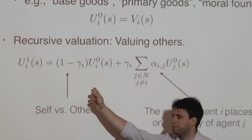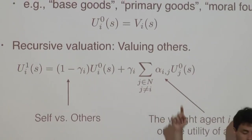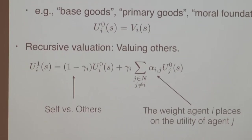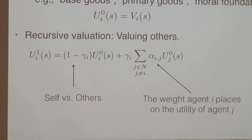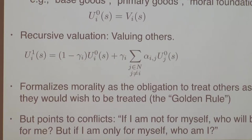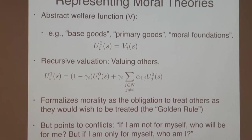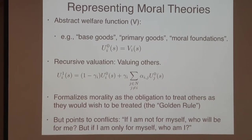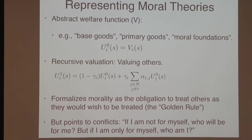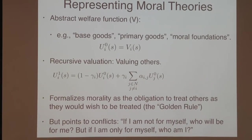What's interesting about humans is that we have the ability to recursively value others. We don't just value ourselves — we can value the values of other people. So we can say: I value myself with some trade-off, but I also value other people with some weight. This can describe all kinds of different moral values. It shows in a simple way how these different values can come into conflict. You can think about this as formalizing the obligation to treat others as they would wish to be treated, because you're taking their utility function and putting it into yours recursively.